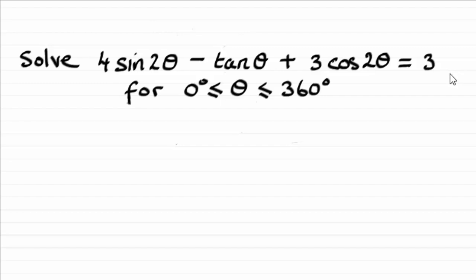It's a bit different from what we've been doing earlier if you've been looking at the videos in this series. We've got to solve this equation 4 sin 2θ minus tan θ plus 3 cos 2θ equals 3, for θ greater than or equal to 0 degrees but less than or equal to 360 degrees.